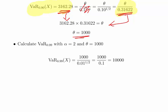Calculate the VaR at 0.99 of X, the 99th percentile, with alpha equals 2 and theta equals 1000. Essentially put the values into the equation. In this case, 1 minus P is 1 minus 0.99, and that equals 0.01. Get the square root of that and we get 0.1. So 1000 divided by 0.1 gives us an answer of 10,000.